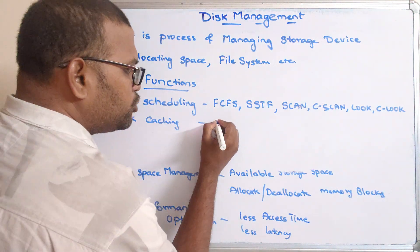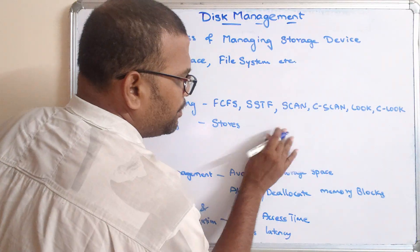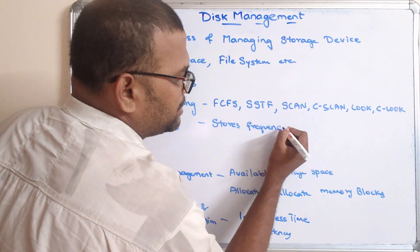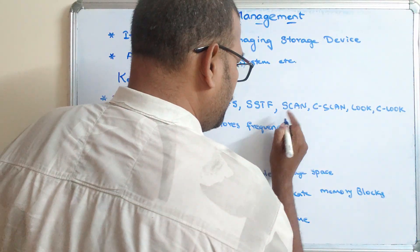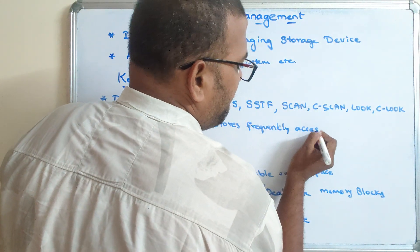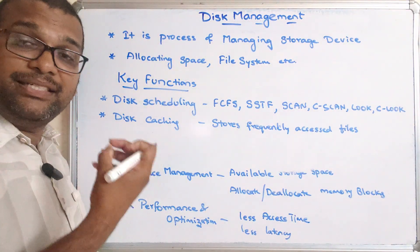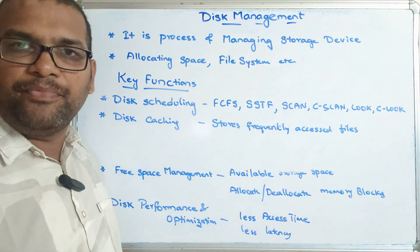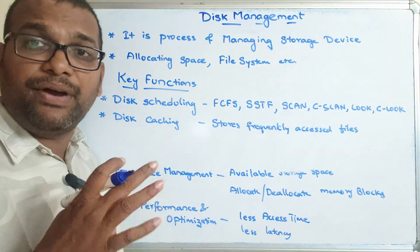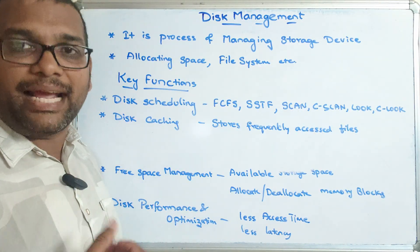The next function is disk caching. It stores frequently accessed files, similar to cache memory. All files that are being frequently accessed are stored in the disk cache in order to provide fast access.